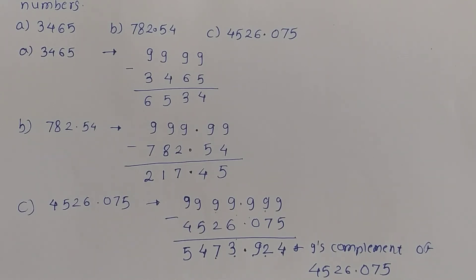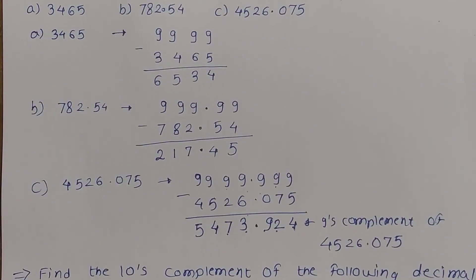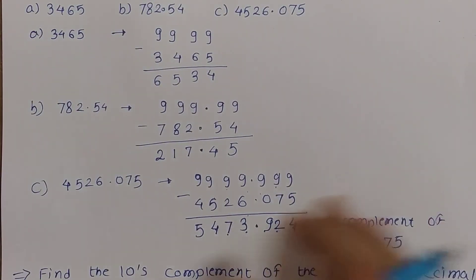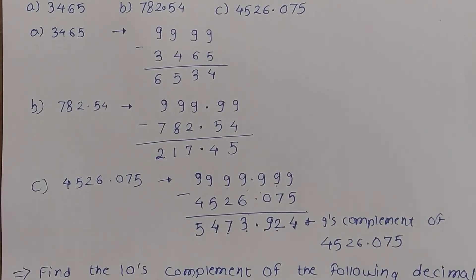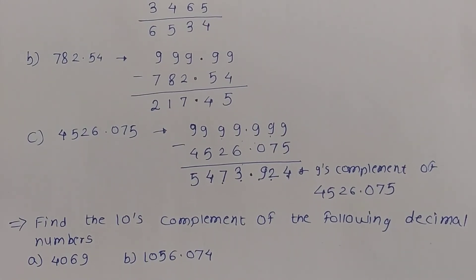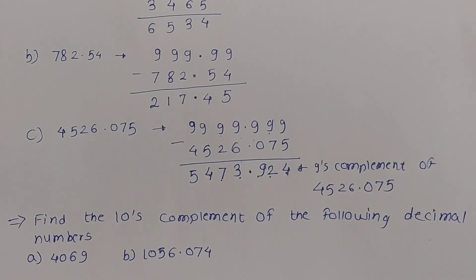Now we will see how to find the 10's complement. To find the 10's complement of a decimal number, we have to add 1 to the 9's complement of that decimal number. To understand how to find the 10's complement, we will solve the following examples.